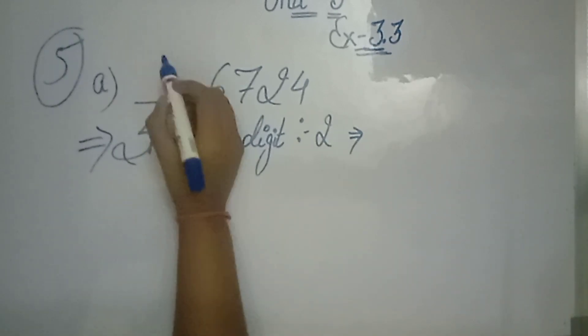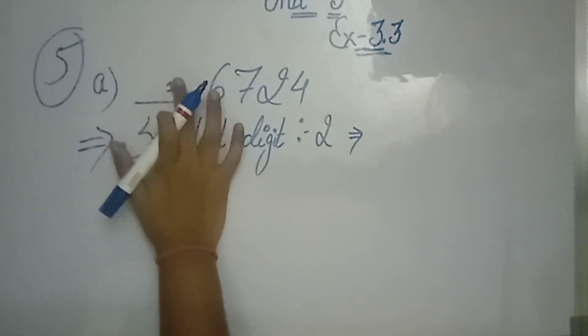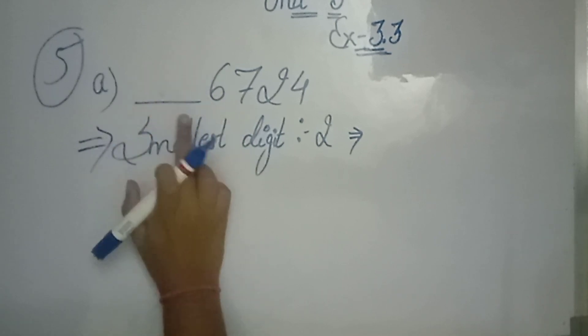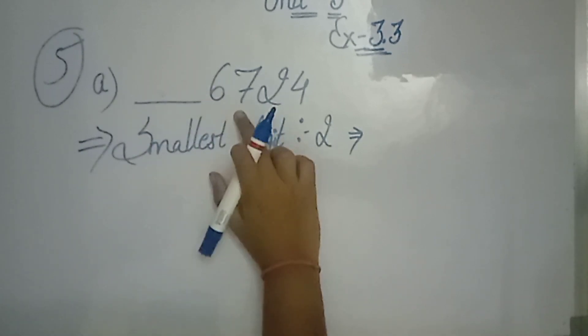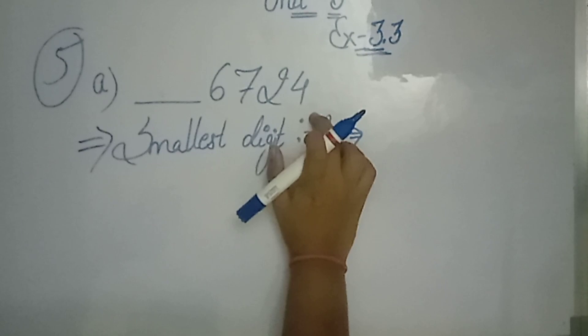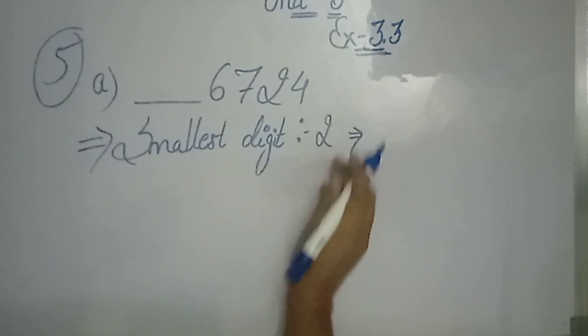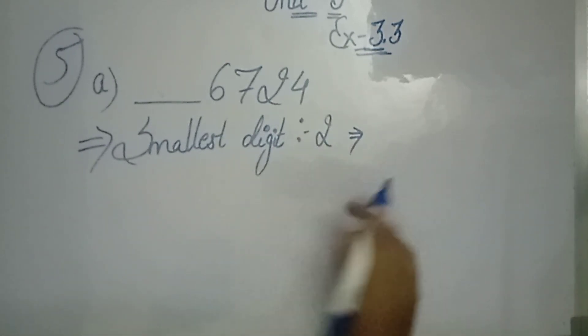If we write 1, how much will it come after writing? 7, 7, 14, 16, 20. So 20 is divisible by 3 or not, so we do it from 2.